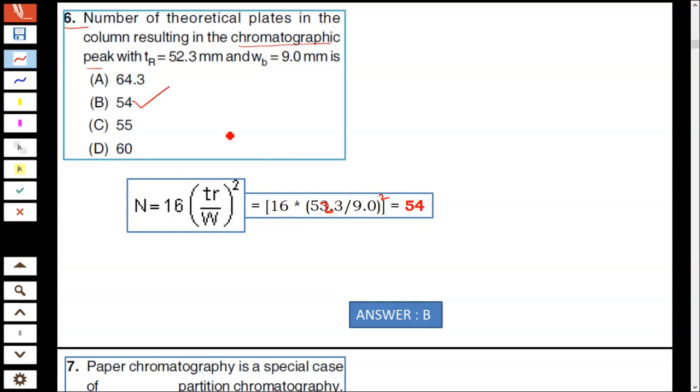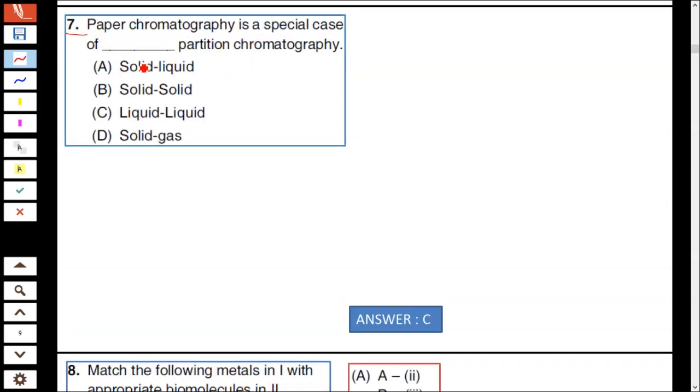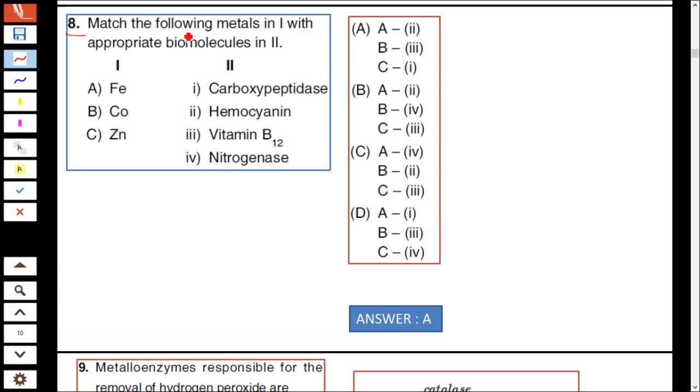Question number 7: Paper chromatography is a special case of liquid-liquid chromatography. It's not solid-solid, solid-liquid, or solid-gas. It's liquid-liquid chromatography. Question number 8: Match the following metals in first column with the appropriate biomolecules in the second column.